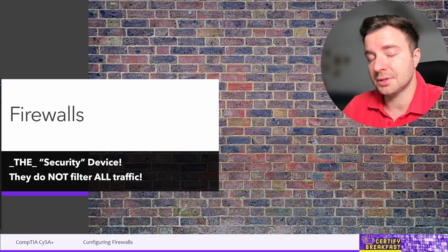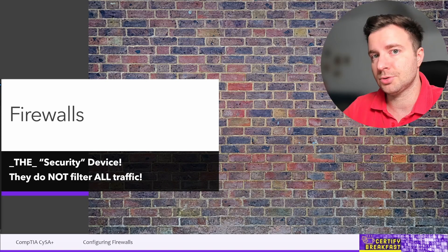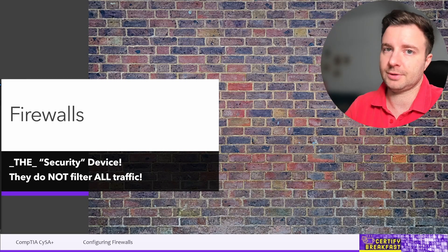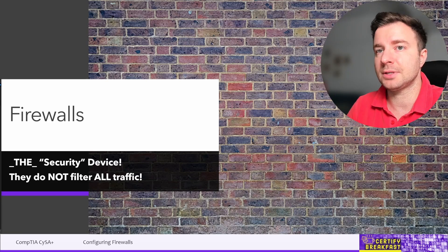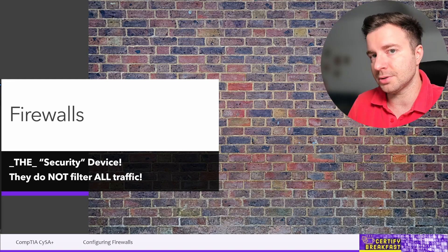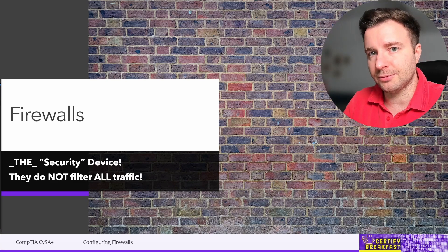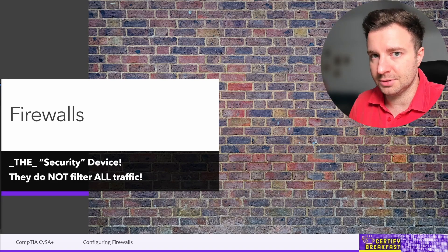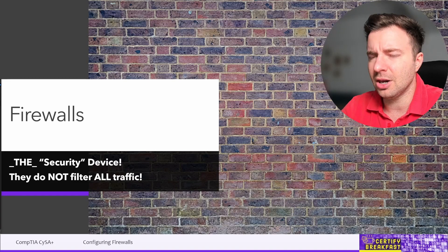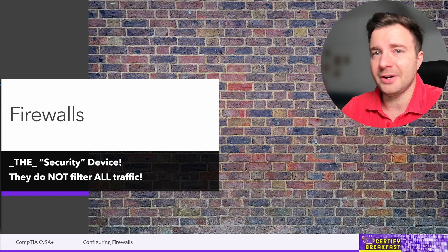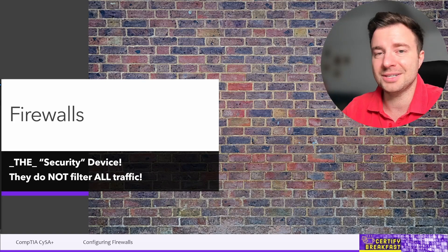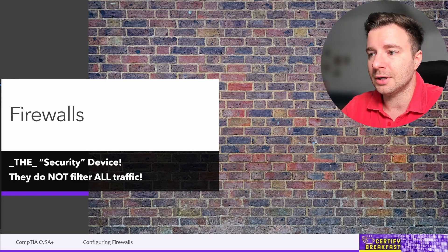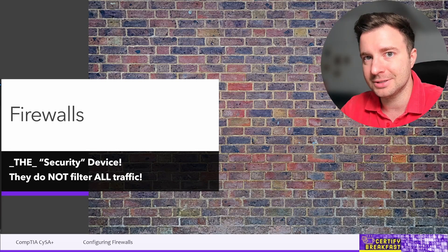Contrary to popular belief, a firewall is not an impenetrable device. We don't use firewalls to block all traffic — if you want to block all traffic, all you need is a disconnected network cable. A firewall is a network security device that looks at incoming and outgoing traffic going to or from your network and decides whether to allow or block specific traffic based on a predefined set of security rules.